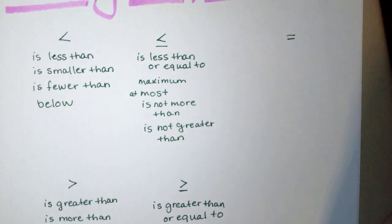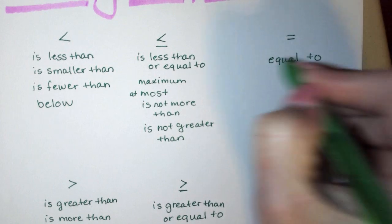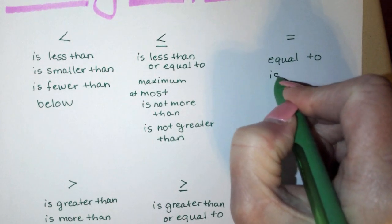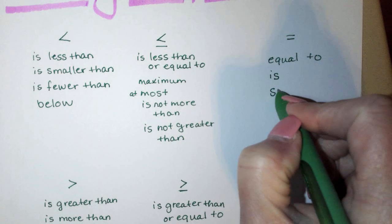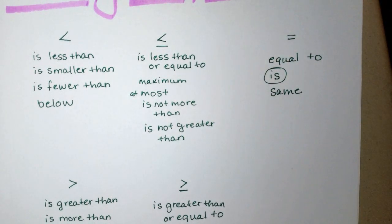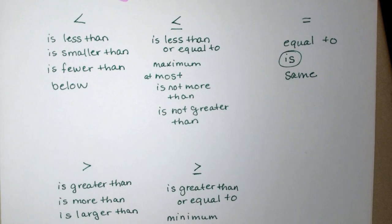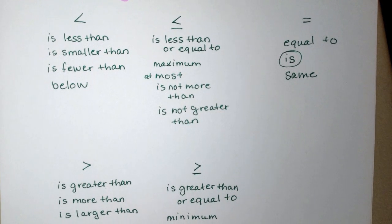And then, of course, we have the symbol that we use in all of the equations. That means equal to, is, or they would be the same. This word is is used a lot in writing equations from problem situations. All of these words could be used in a problem situation and can help you write equations.